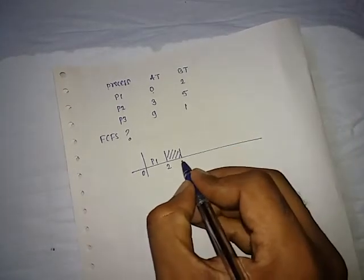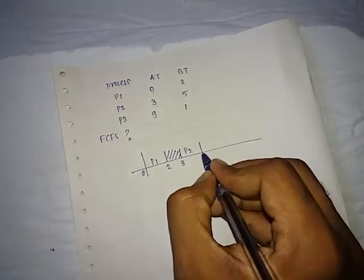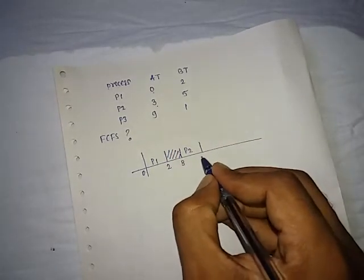Now, at time interval of 3, there is a process that is P2 process. So we can complete this P2 process up to 5, that means 5 plus 3, that's 8.